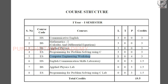Next is Computer Engineering Workshop, which has 1 lecture point and 4 practical points, giving a total credit of 3. Here, practical credits are calculated differently. If you observe, for a lecture you get the same number of credits as lecture points, but for practicals, you calculate half of the practical points. So: 1 lecture point plus 4 practical points divided by 2 equals 2, giving a total of 3 credits.